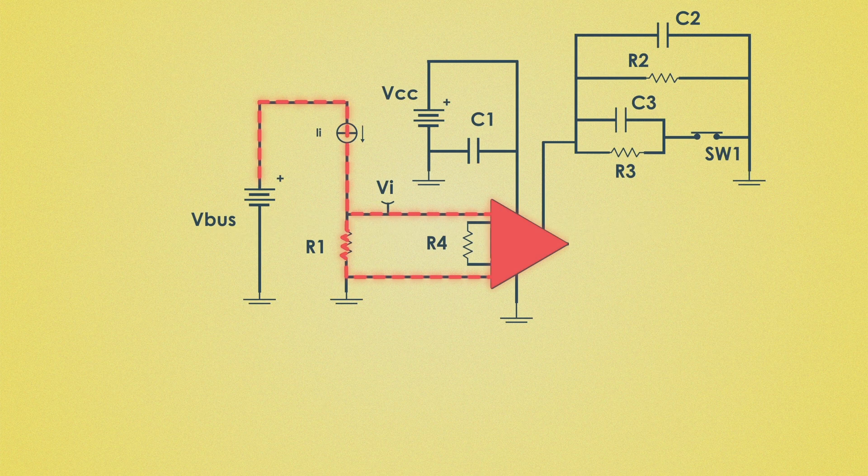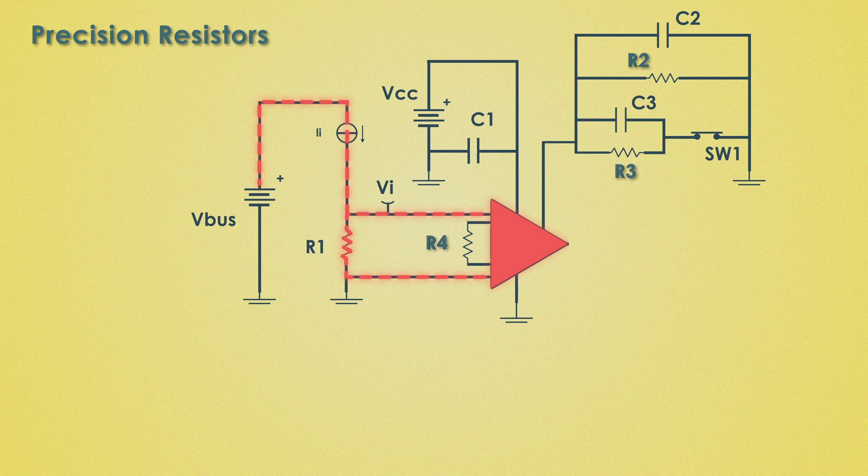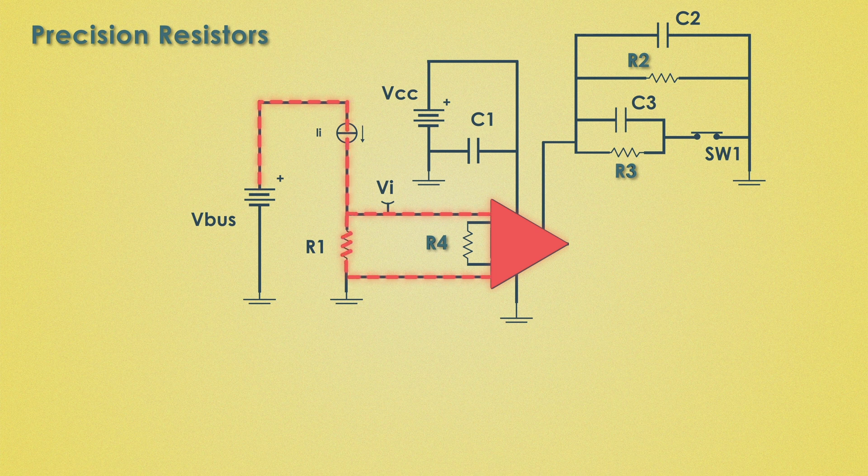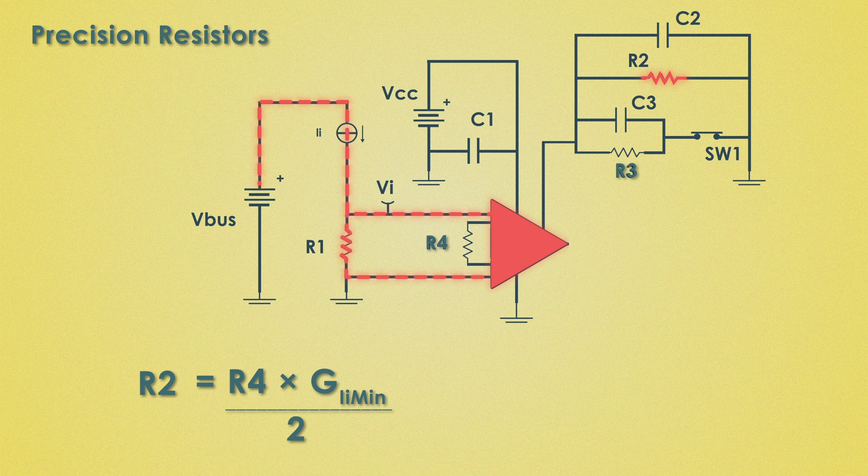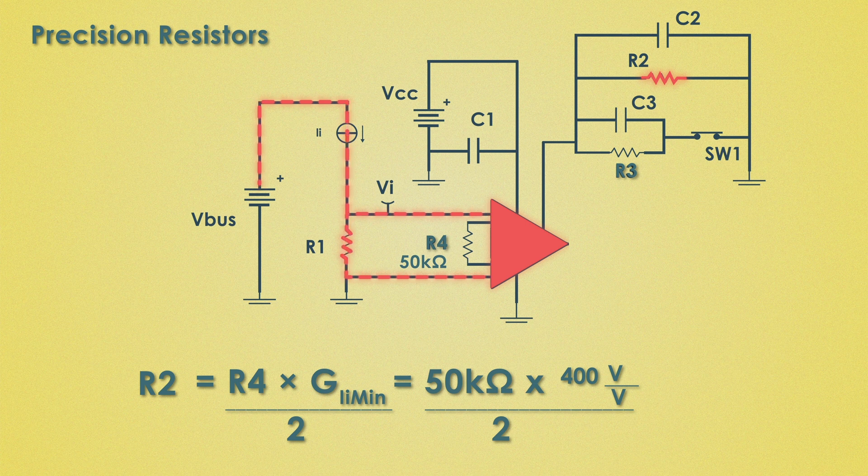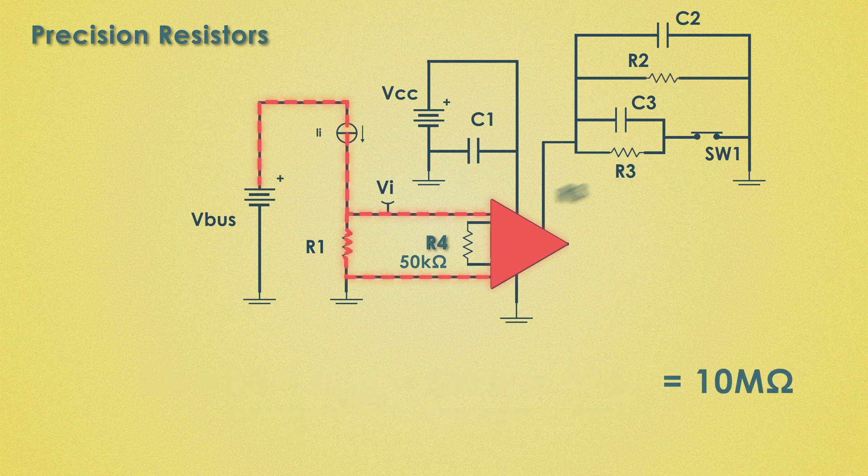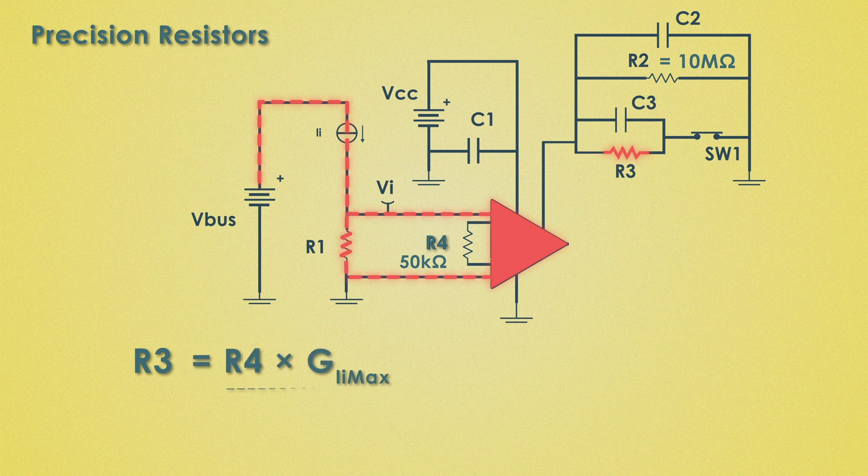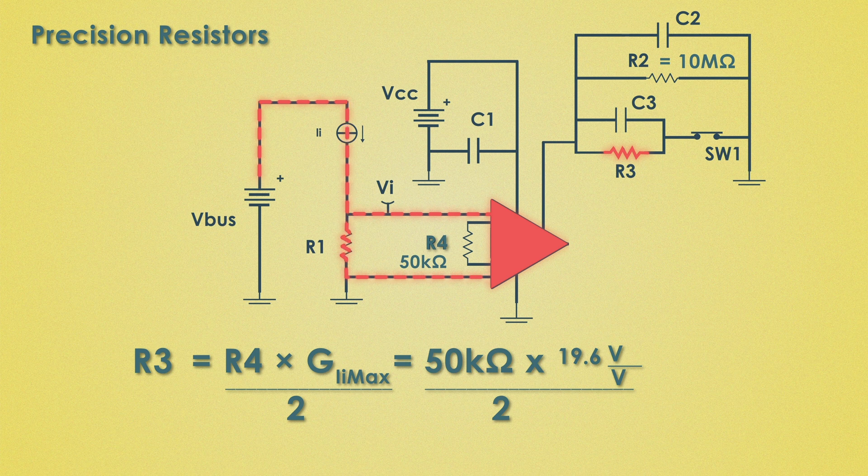The circuit uses precision resistors R2, R3 and R4 to implement the required gains. Let's calculate these values. To calculate R2 we will use this formula where we need value of R4. So for this application we will assume R4 as 50 kilo ohms. So from this the value of R2 comes as 10 mega ohms. And for R3 we can use this formula using gain for maximum current. So R3 will be calculated like this.